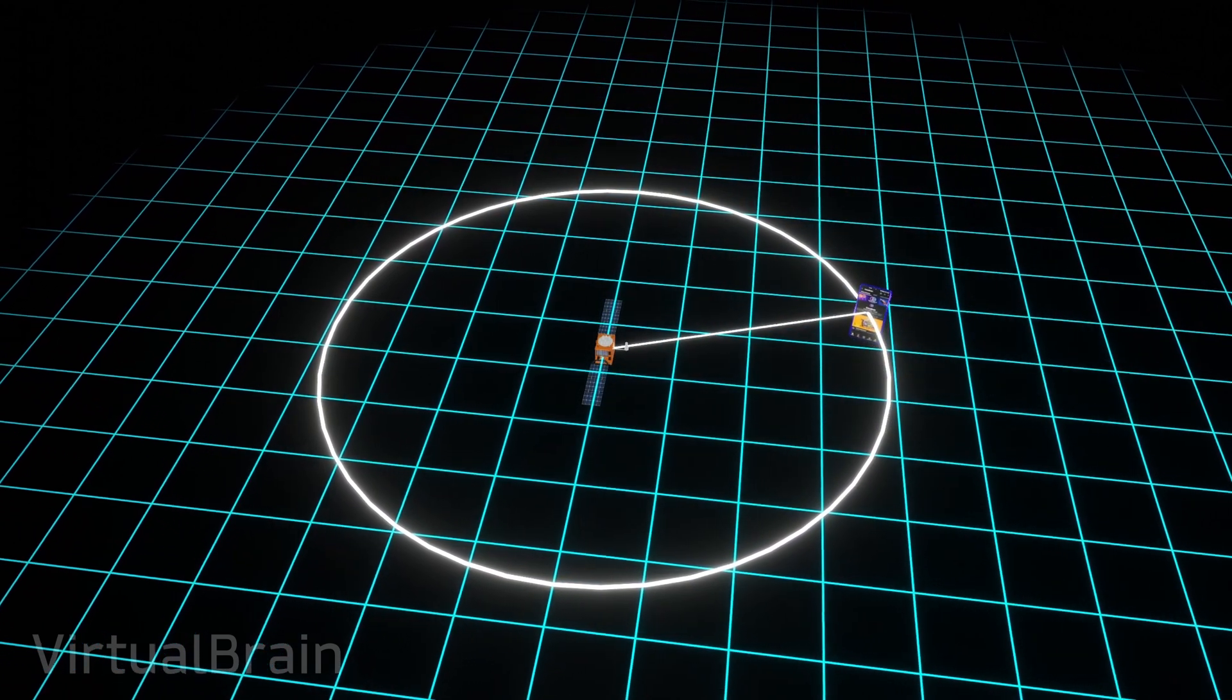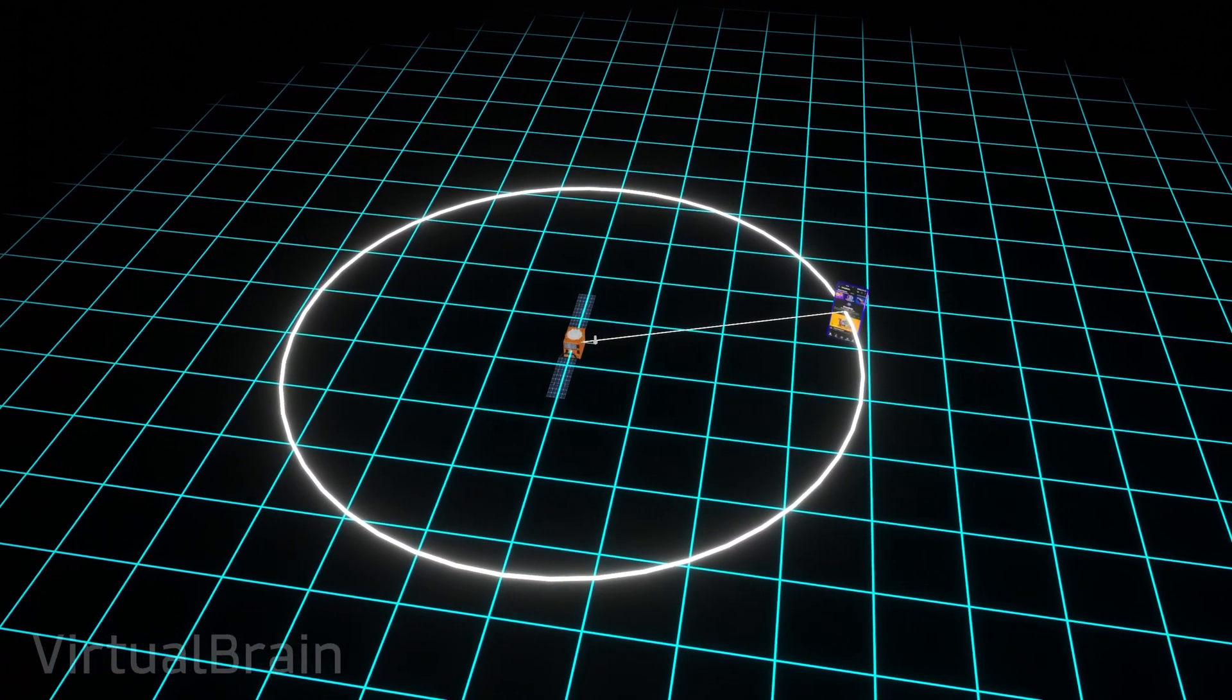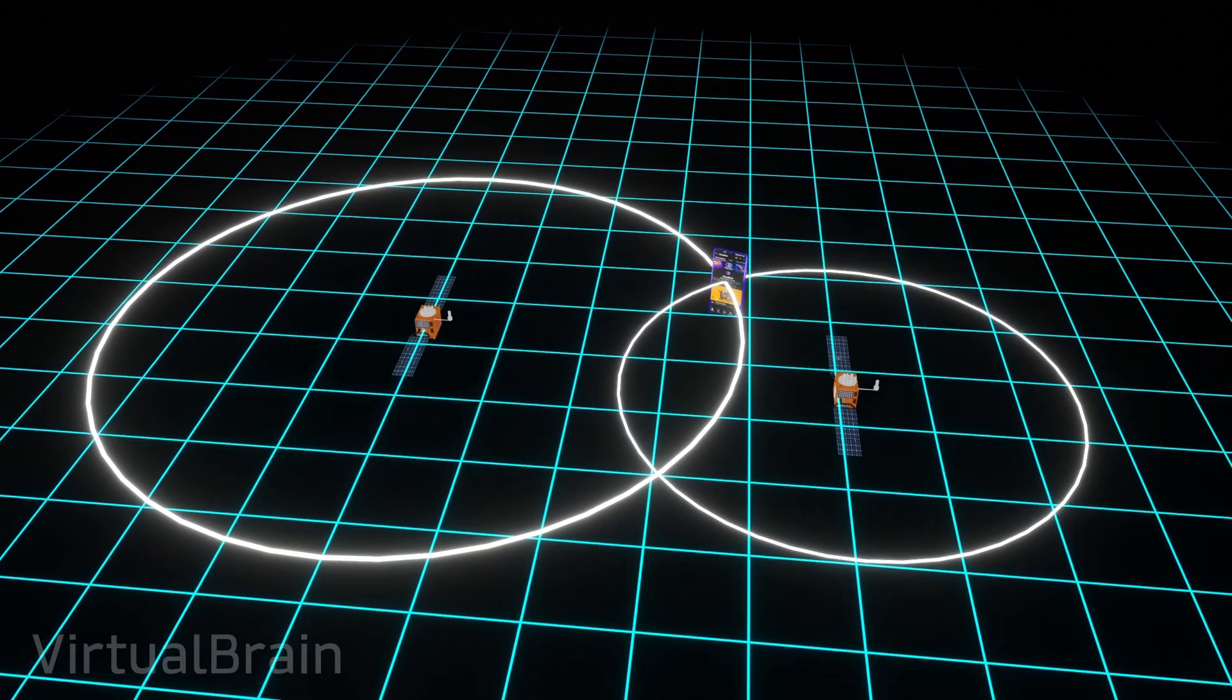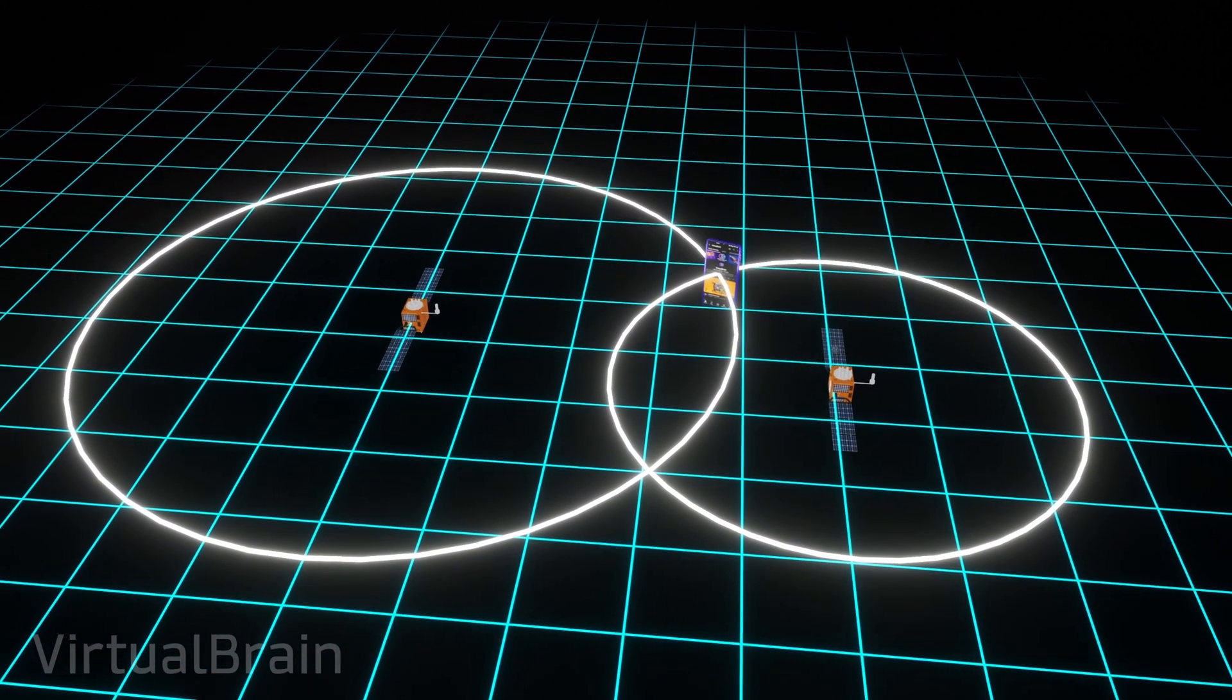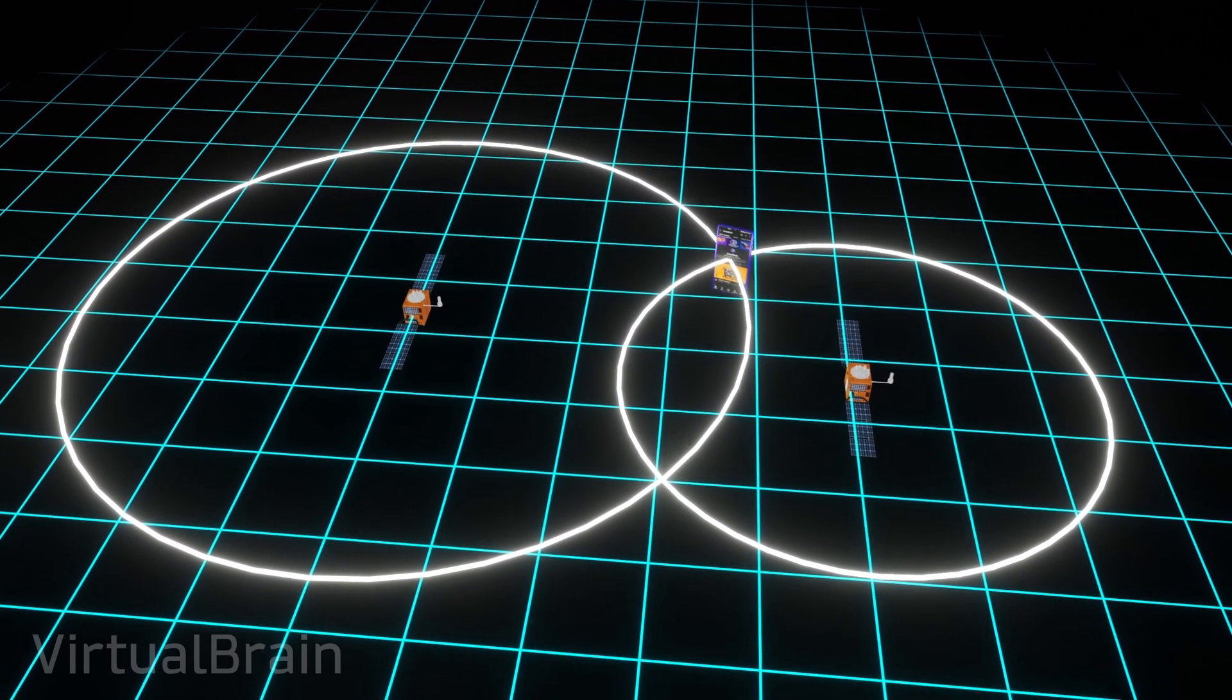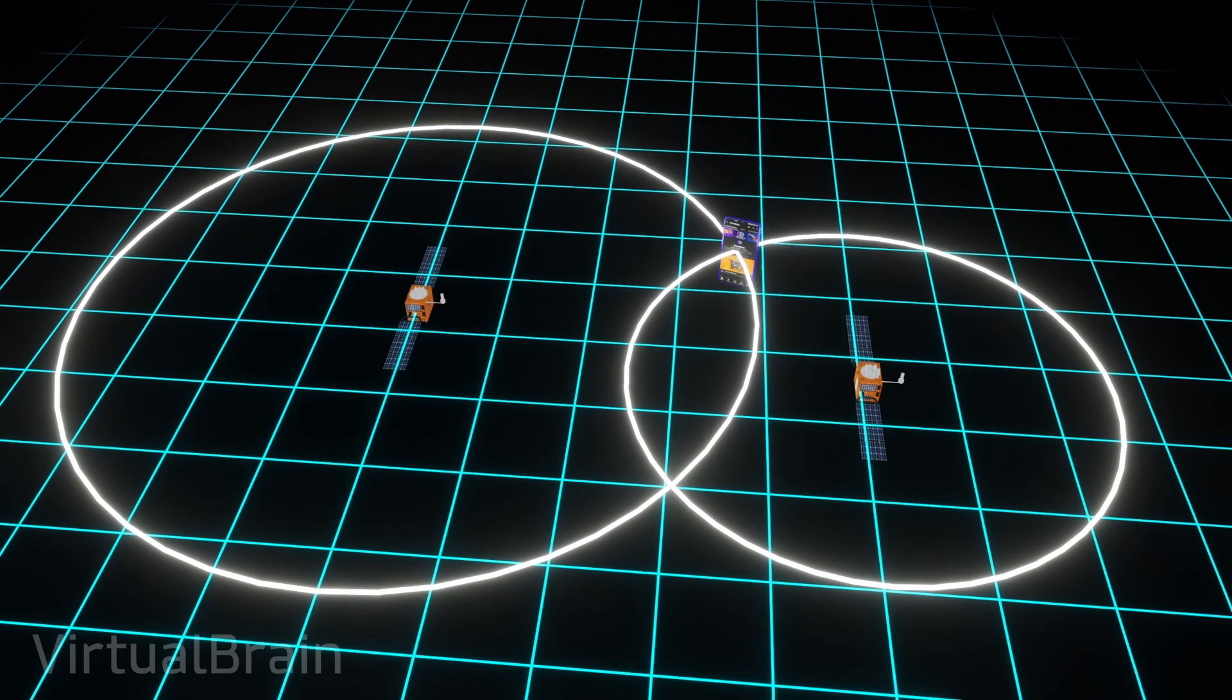If we consider a second satellite, for which we know its location and the distance between it and the phone again, things would improve a bit. This time, the only places where the phone could be found are at the points where the circumferences intersect, which means there are two possible locations.